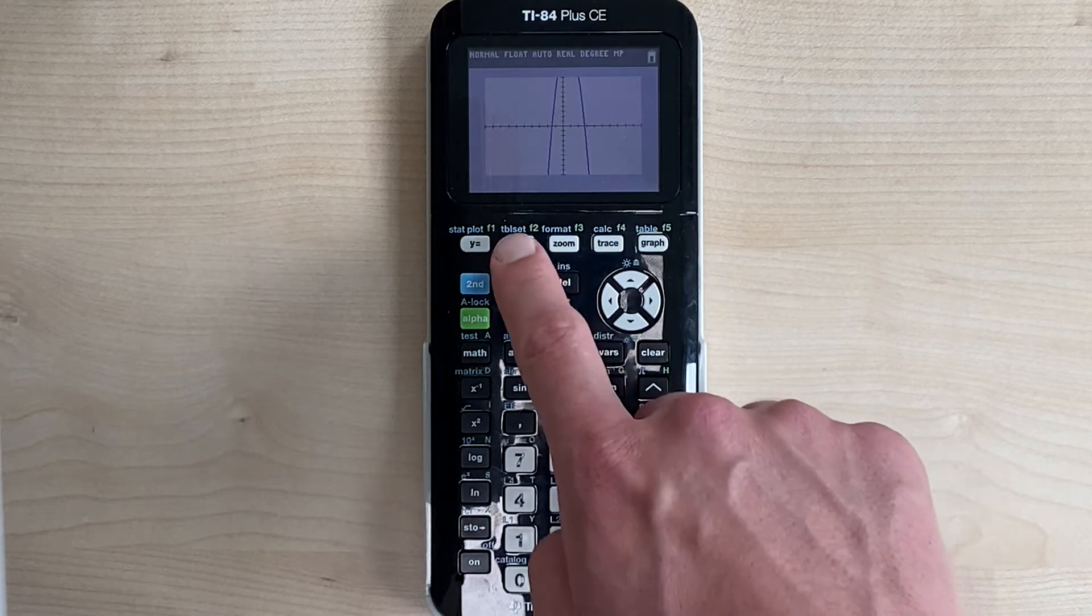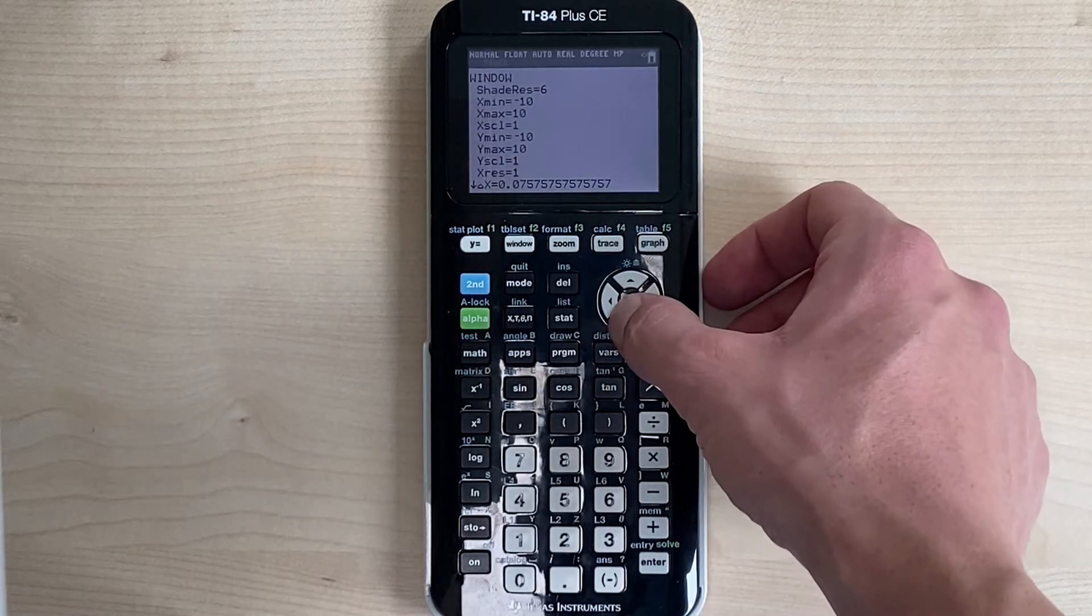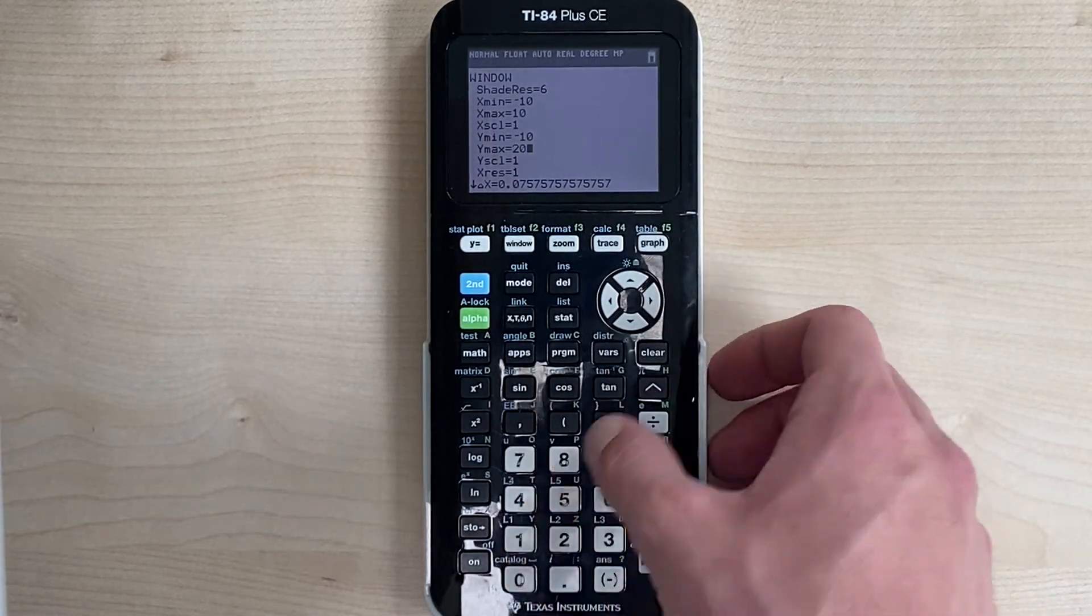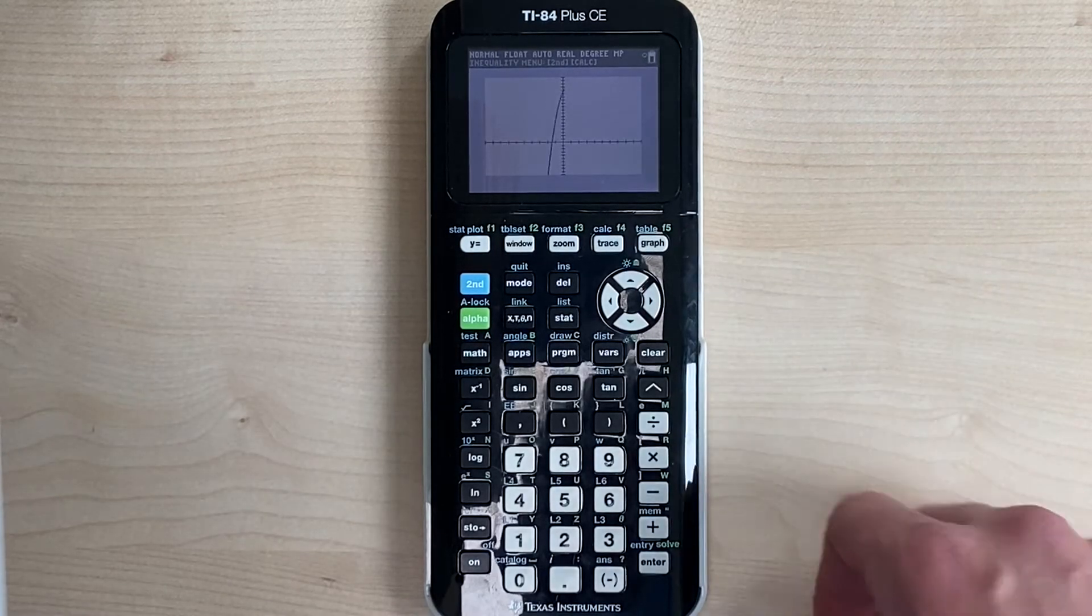So let's adjust our window back so that we can see our vertex. Let's change the y-max back to 20. And now let's talk about trace.